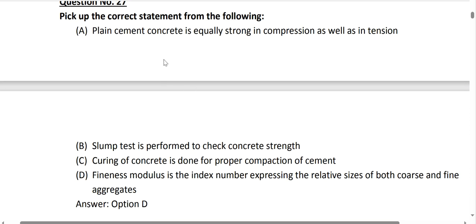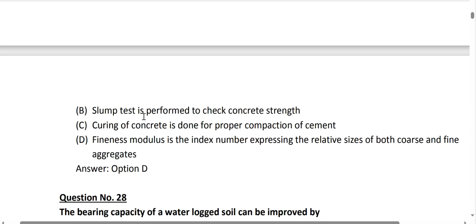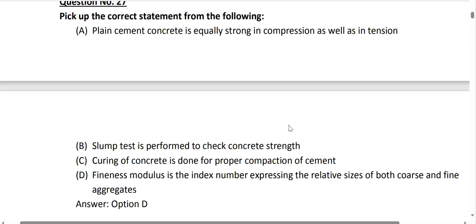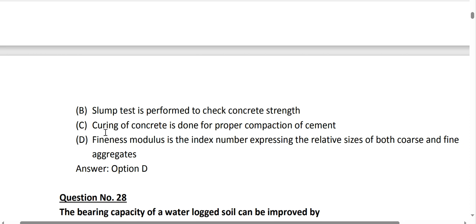Question number 27 covers several statements. Plain cement concrete is not equally strong in compression and tension — it requires reinforcement. The slump test is performed for workability of concrete, not just concrete strength testing. Curing of concrete is done for proper hydration of cement, not compaction. Option D is correct: fineness modulus is an index number expressing the relative size of both coarse and fine aggregates.